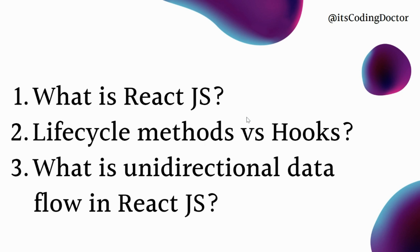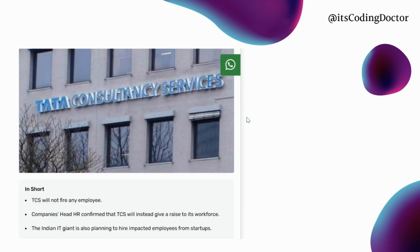The third question was: what is unidirectional data flow in React JS? Unidirectional means that data can only be passed from top to bottom in React JS. Of course, there are workarounds where you can pass data from child to parent as well, but the question was specifically about unidirectional data flow.